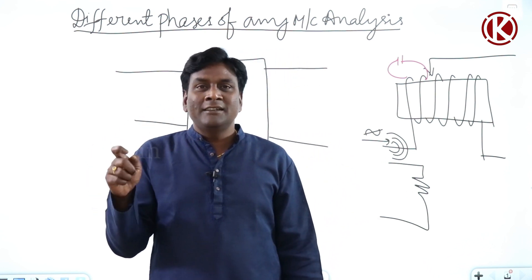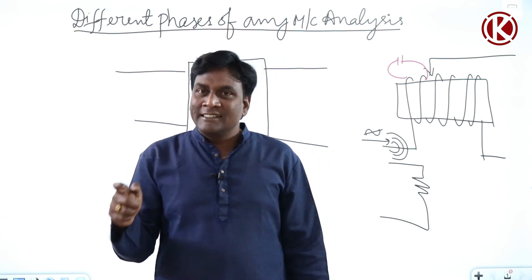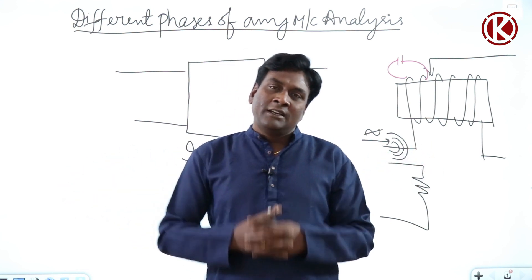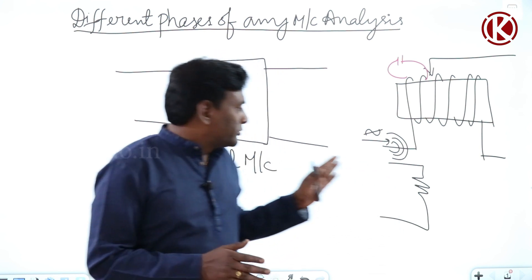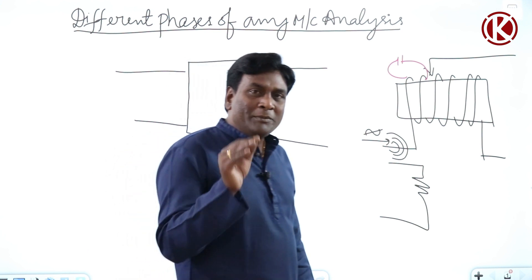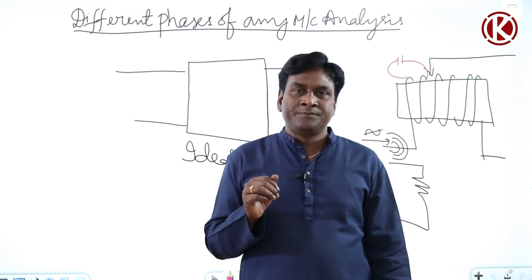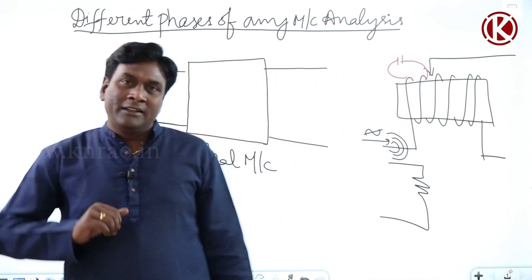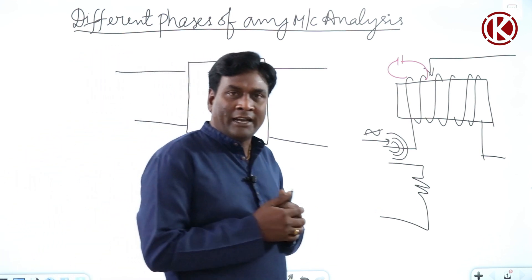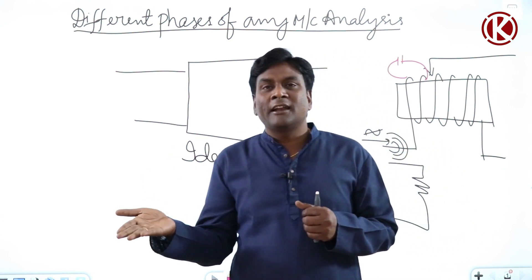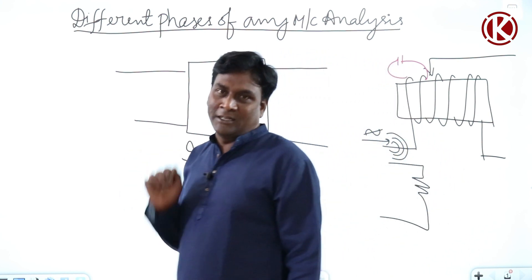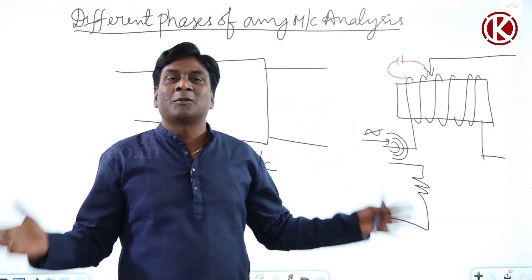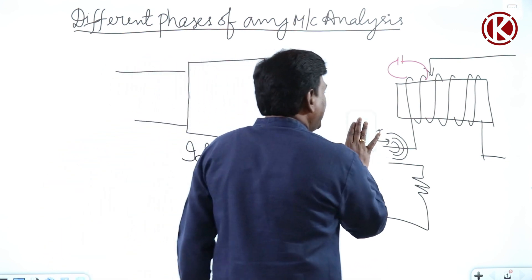In network theory, we consider resistance, inductance, and capacitance as ideal elements. An ideal inductor on paper has only pure inductance, but a practical inductor must be represented by a combination of resistance, inductance, and capacitance. Similarly here, we are going to start with an ideal machine. Ideal machine does not mean core losses are neglected — core losses are not considered for the time being, because they will be considered at a later point.